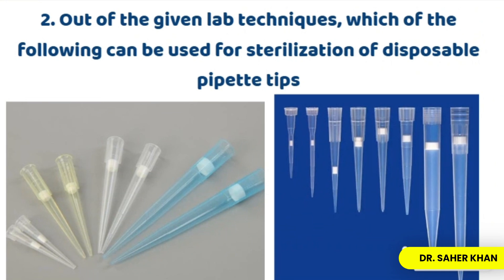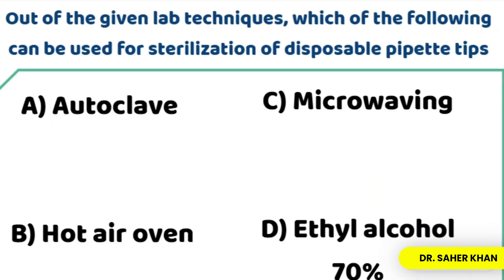Our next question: out of the given lab techniques, which of the following can be used for the sterilization of disposable pipette tips? The options are: hot air oven, microwaving, 70% ethyl alcohol, and autoclaving.